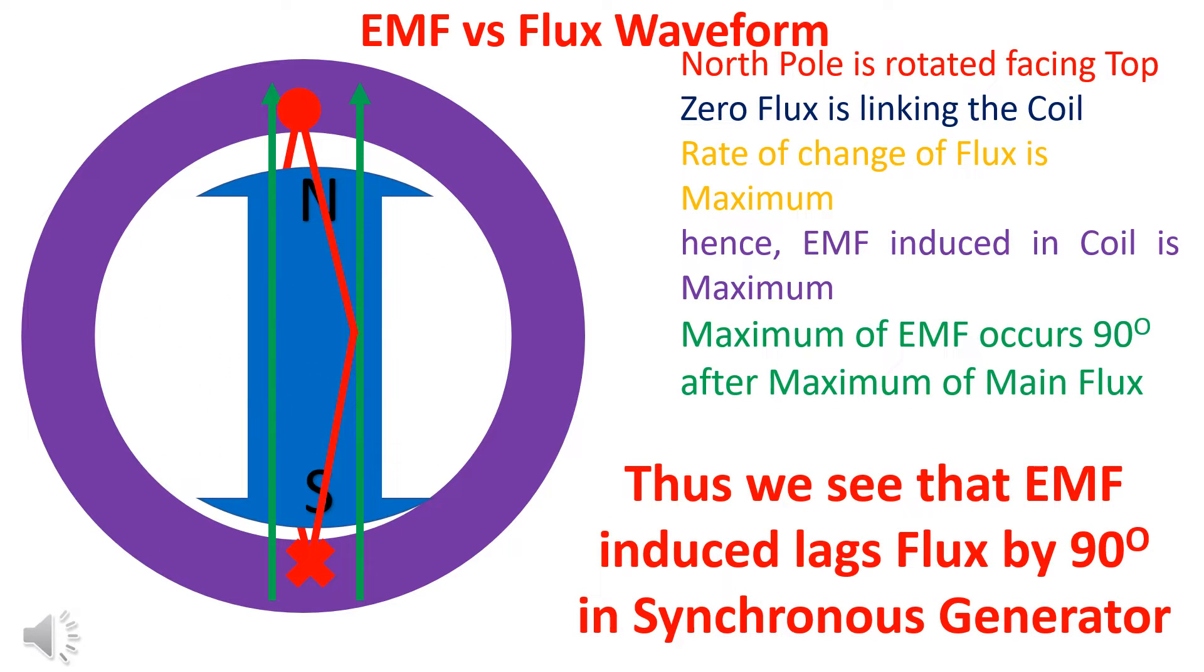Now, let us rotate the poles by 90 degrees anti-clockwise. Flux linking the coil is zero, but dφ/dt is maximum. Hence, induced EMF is maximum. Thus, we see that EMF lags flux by 90 degrees.